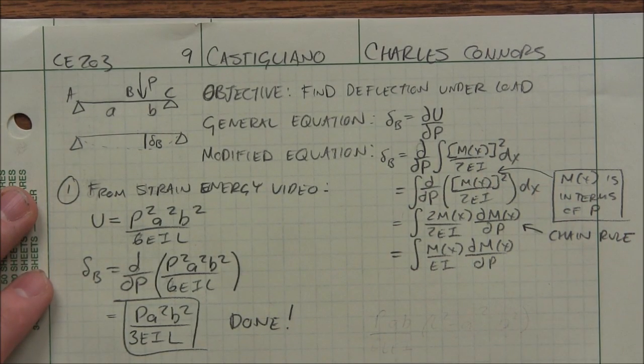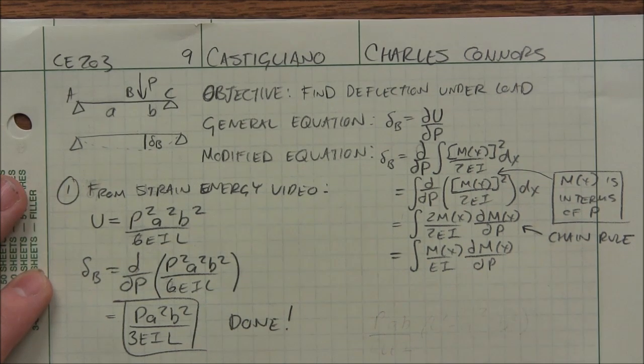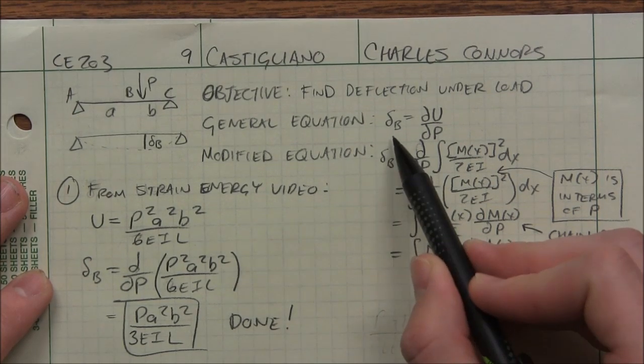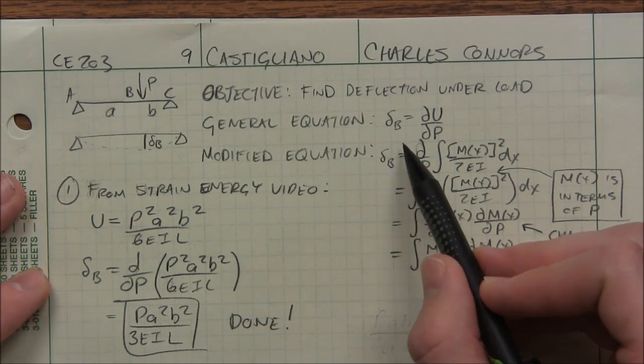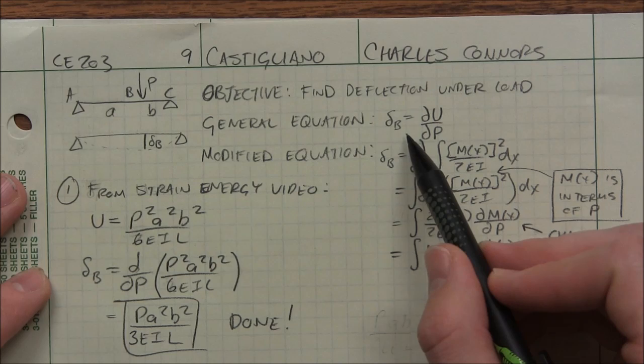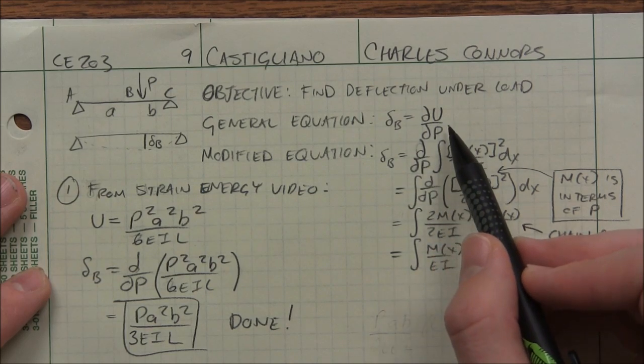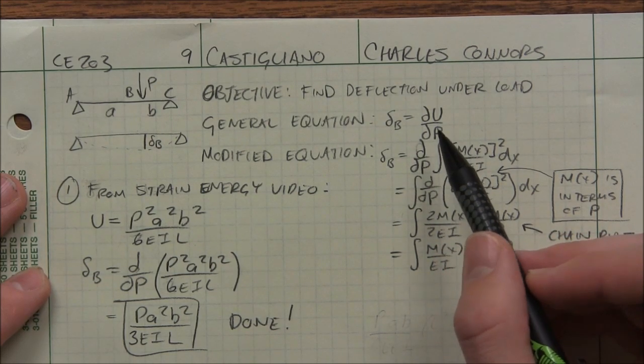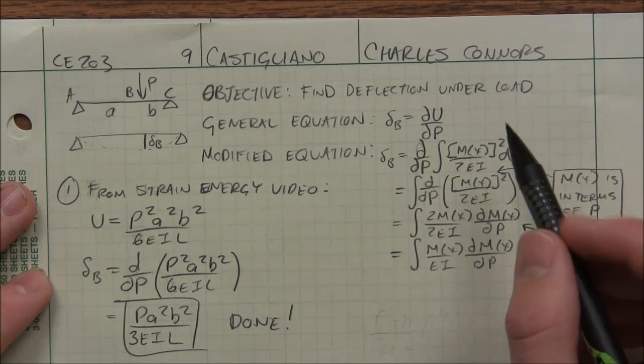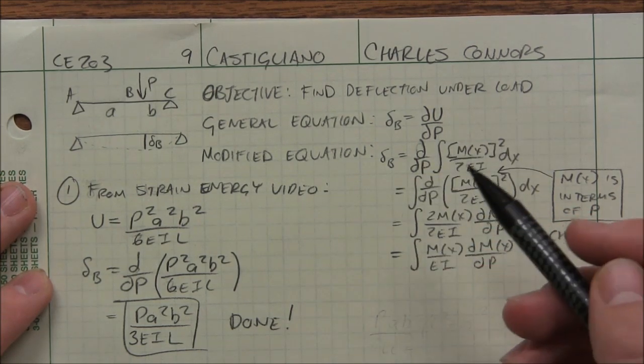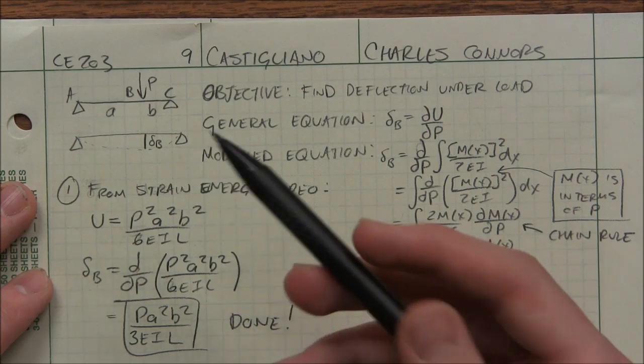Now there's two different versions of this theorem or the equations. You generally have that the deflection under a particular concentrated load is equal to the total strain energy of that beam differentiated with respect to that load. It sounds kind of complicated, but you don't have to worry about it. It's just you're taking the differentiation with regards to P, if my force is P.